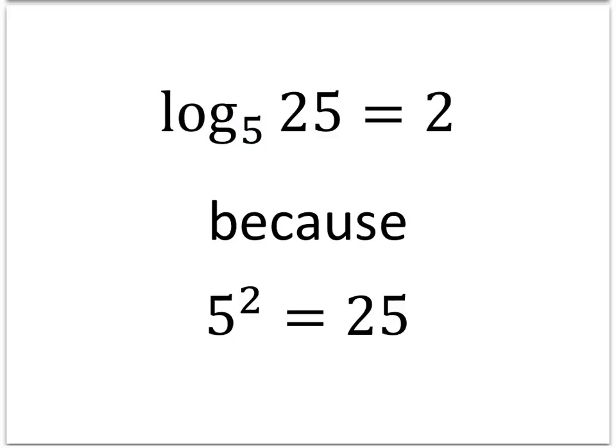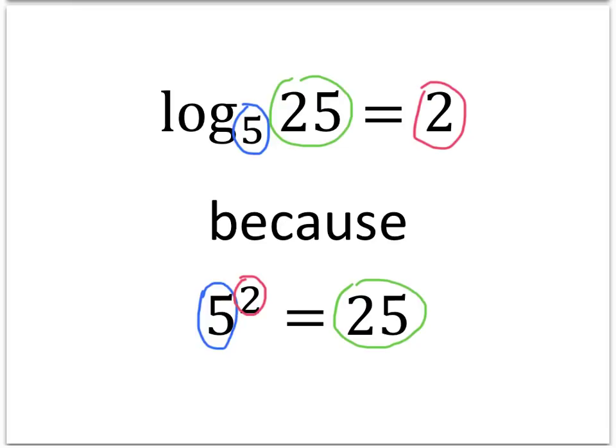Let's look at some examples. The log base 5 of 25 is equal to 2 because 5 to the 2 equals 25. The base of the logarithm is the same as the base of the exponential expression. The value of the logarithm is the exponent, and the number inside the logarithm is the value of the exponential expression.